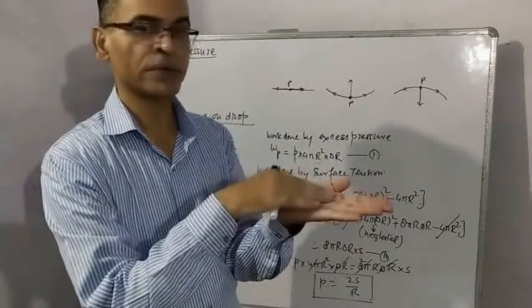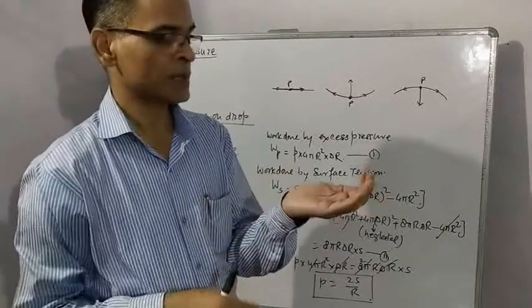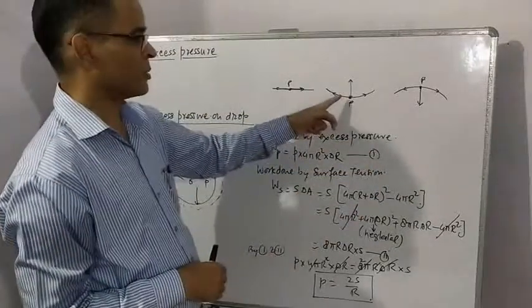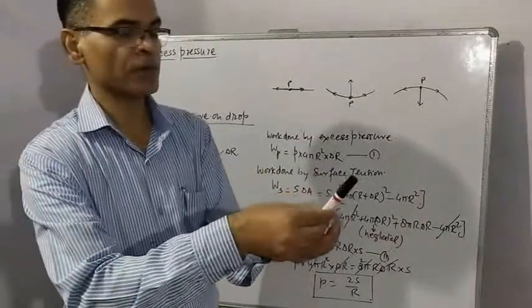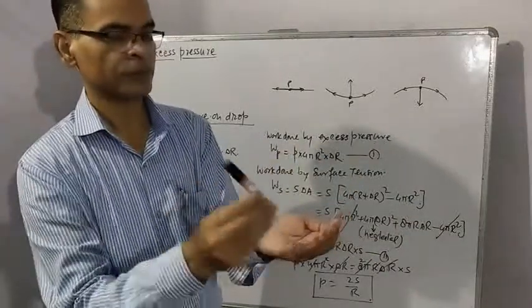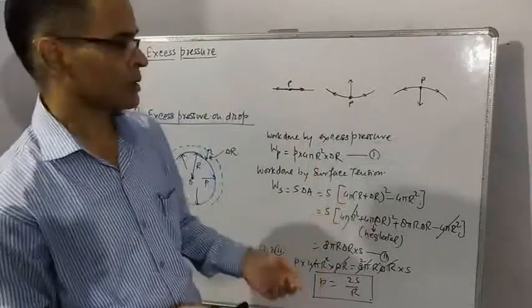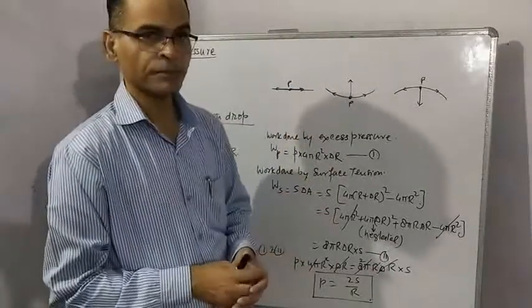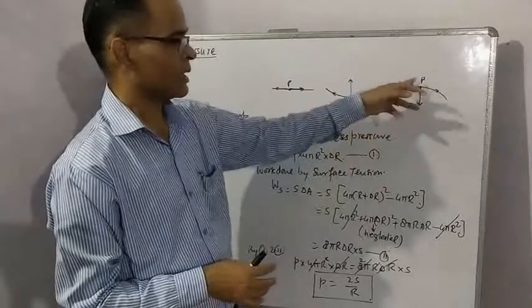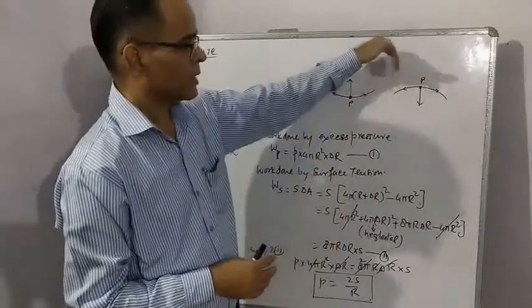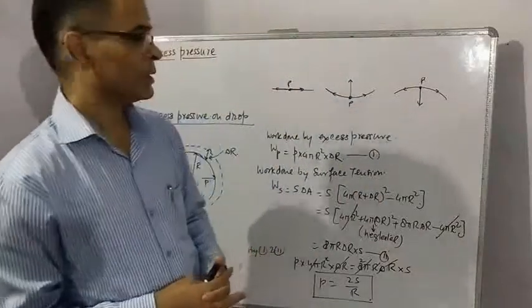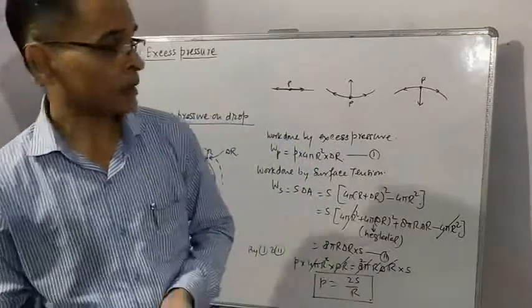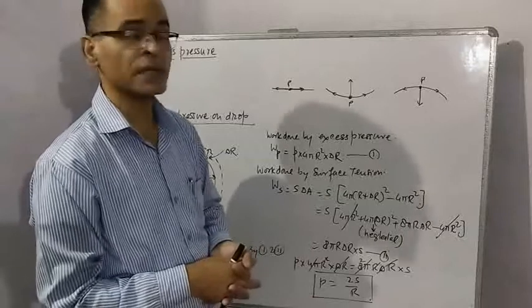But the surface is either like this or like this. So if you consider one molecule, intermolecular forces are acting like this. In such condition this molecule will experience some resultant force upwards. By same logic, in case of convex meniscus, resultant force acts downwards.